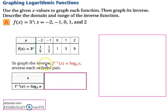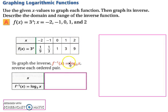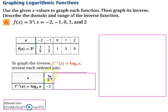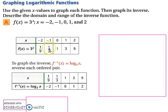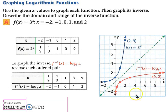To graph the inverse — and since the inverse of an exponential is logarithmic, the inverse would be log base 3 of x — recall that to find the inverse of anything, you simply switch your x and y values. So your x value becomes 1/9 and your y value becomes negative 2. We simply switch all the pairs, then graph the ordered pairs, and you end up with the logarithmic graph.